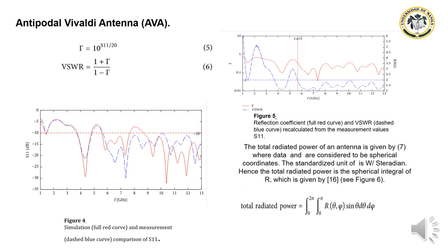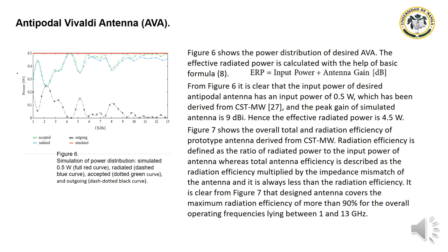In Figure 6, the formula for power distribution is shown. Figure 6 shows the simulated power at 0.5 W input — the full red curve for radiated power, dash blue curve for accepted power, dot green curve, and dash-dotted black curve for outgoing power — illustrating the power contribution of the SAR AVA antenna. The effective radiated power is calculated using the basic formula.